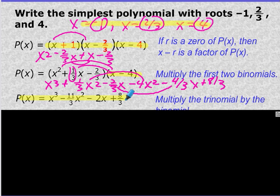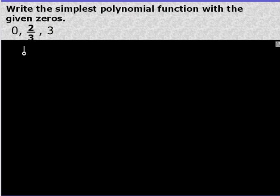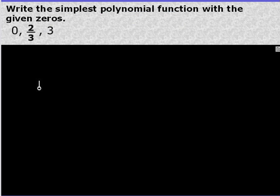All right, I'm going to go through one more example, and then there's one for you to do, and then I'll show you your homework. Okay. So write the simplest polynomial function with the given zeros again. So this is, note, this one is 0, so what does that mean?